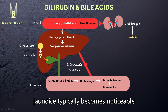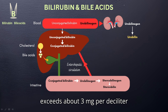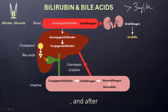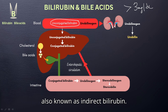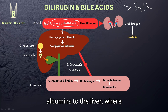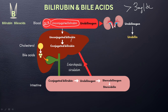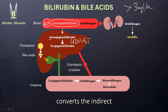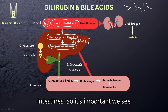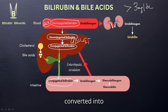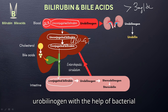Bilirubin and bile acids. Clinical jaundice typically becomes noticeable when the total bilirubin level exceeds about 3 mg per deciliter. After unconjugated bilirubin is produced from heme, it is also known as indirect bilirubin. It is then transported by albumin to the liver where it is conjugated by the enzyme UDP glucuronosyltransferase, which converts indirect bilirubin into direct or conjugated bilirubin. From there, it is secreted into the bile canaliculi and drains into the intestines.